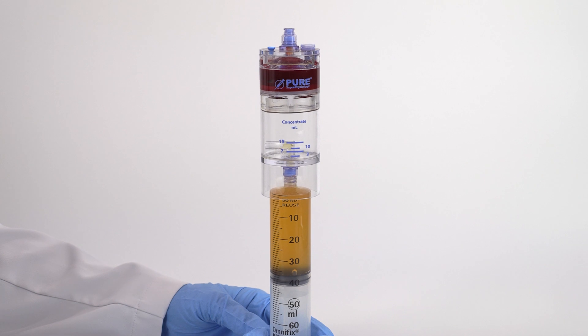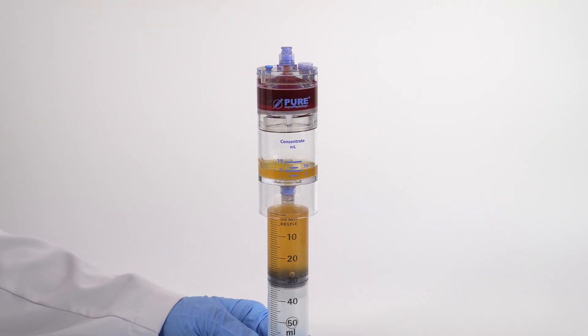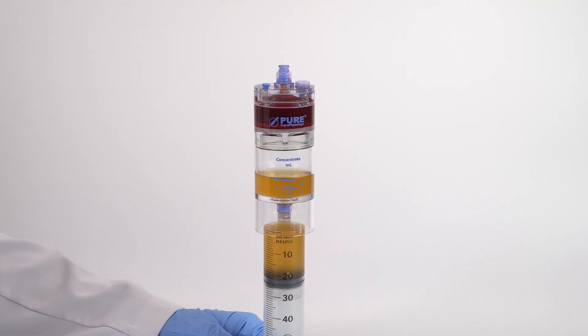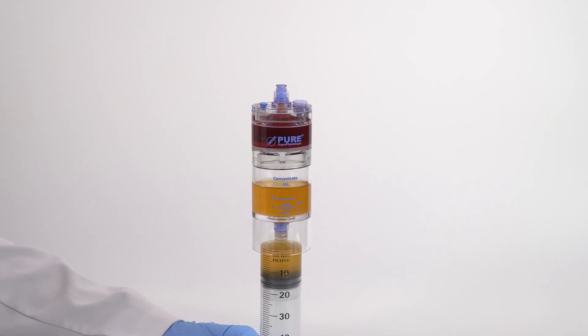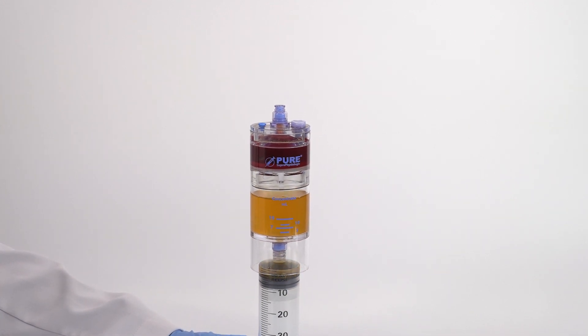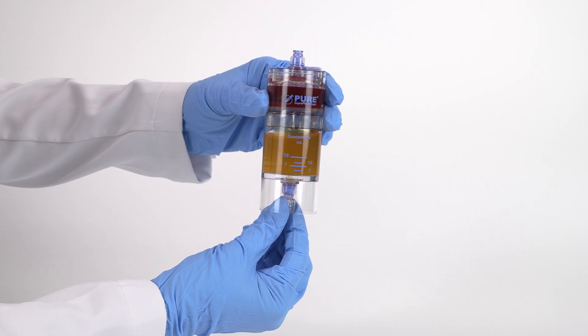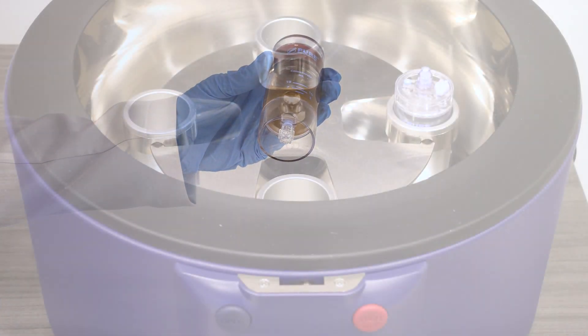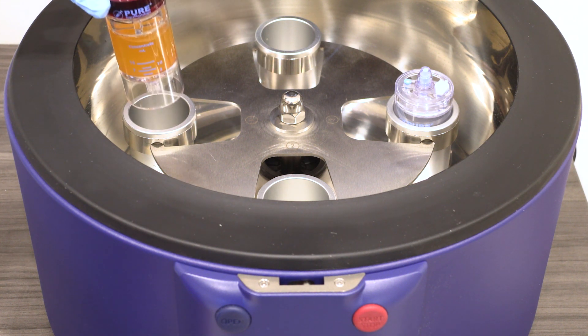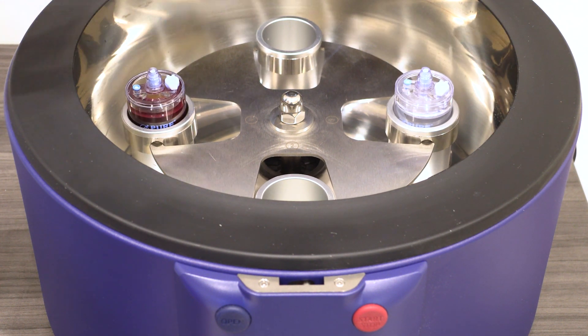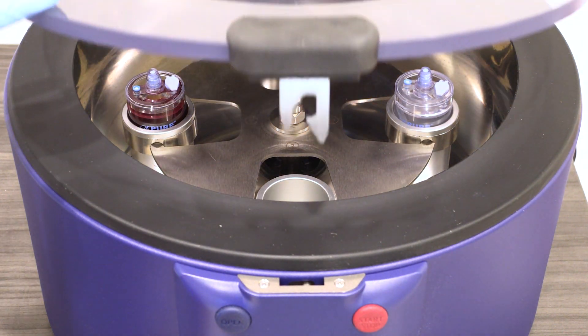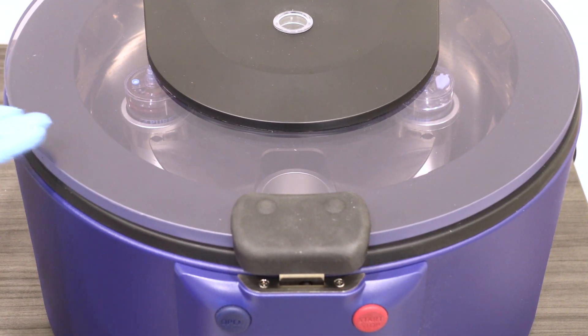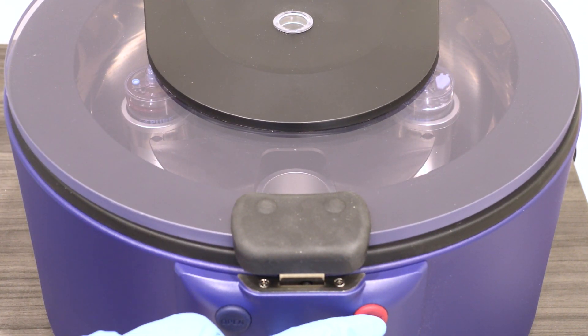Remove the clear non-vented cap from the bottom port of the device and inject the platelet plasma suspension through it. Place a sterile clear non-vented cap back onto the bottom port. Place the device back into the centrifuge rotor and follow the protocol settings provided in the IFU. Close the centrifuge lid and press start.